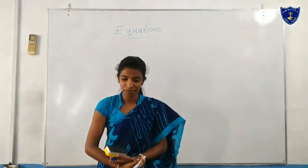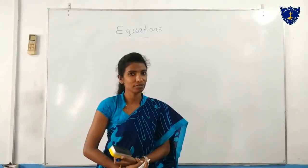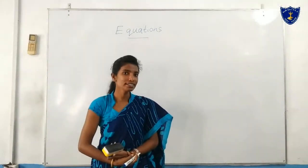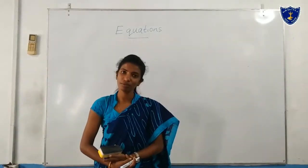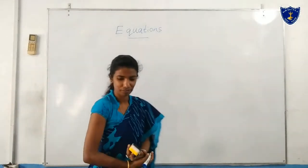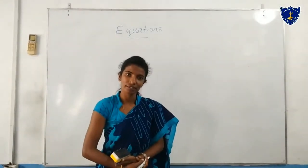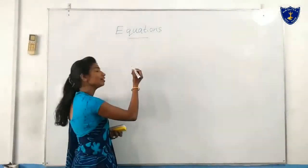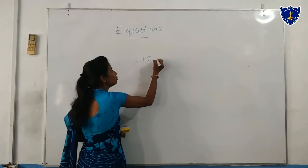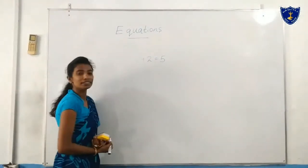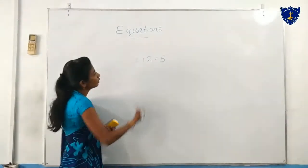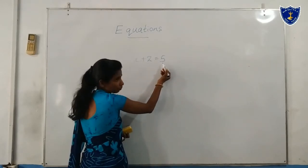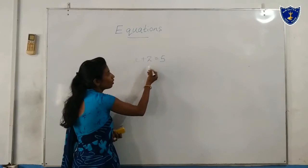Now you can do exercise 17.1 in your textbook. Shall we move to our next subtopic: solving equations. This is a simple equation. Here we can see x plus 2 equals 5. Then we want to remove this plus 2.